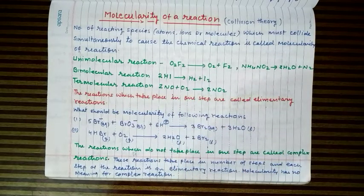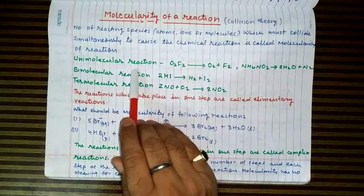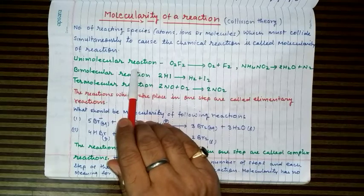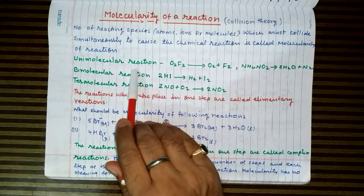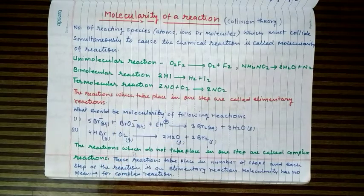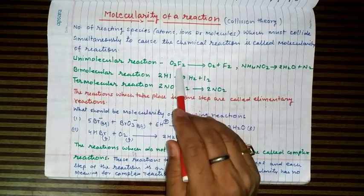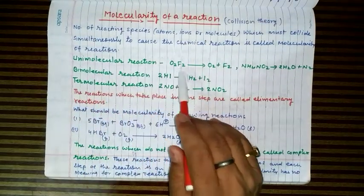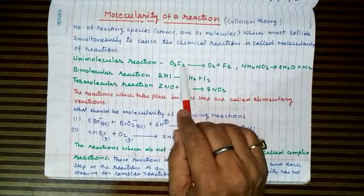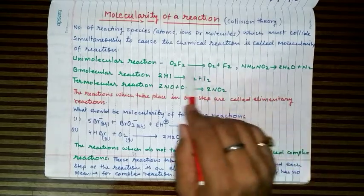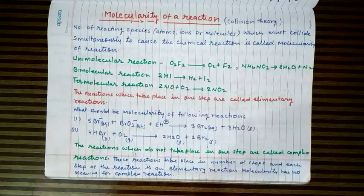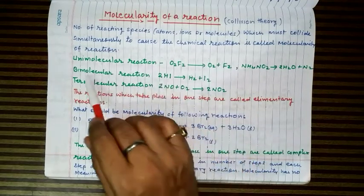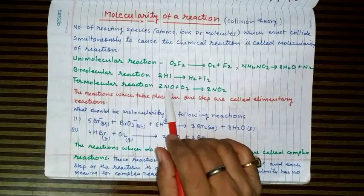Reactions can be categorized into different molecular types. A unimolecular reaction is where the number of reacting species or molecules colliding simultaneously is one. A single molecule causes the reaction by some mechanism. For example, decomposition of dioxygen difluoride and ammonium nitrite are unimolecular reactions. Bimolecular reaction is when two molecules simultaneously collide to cause the chemical reaction. Termolecular reaction is where three molecules collide simultaneously.